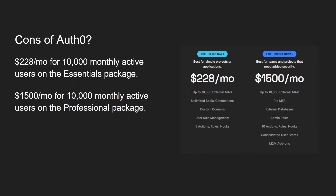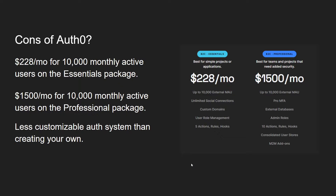So what are the cons of Auth0? The first obvious one is that it's kind of expensive — $228 a month for 10,000 monthly active users for the essentials package, and $1,500 a month for the professional package. Kind of pricey. It's also a less customizable auth system than creating your own. There are things built into Auth0 that let you customize to an extent, but compared to creating your own, you can't beat that for customizability.